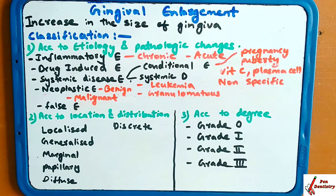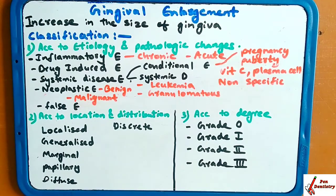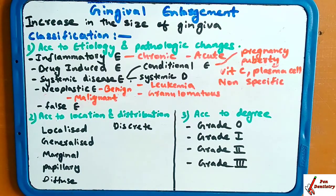Today our topic is gingival enlargement — the increase in the size of the gingiva. The definition of gingival enlargement is increase in the size of the gingiva. The name says it all: there is an enlargement, meaning the increase in the size of the gingiva is taking place.